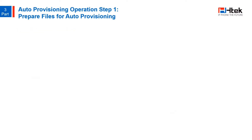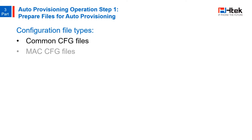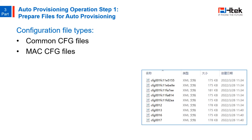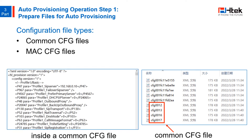You can use the configuration files to deploy and maintain a mass of IP phones automatically. There are two types of configuration files that HTEC IP phones support: common CFG files and MAC CFG files. The common CFG file is effective for all phones of the same model — it uses a fixed name formatted as CFG-something.xml, where something depends on the IP phone model. The MAC CFG file is only effective for one specific phone; it uses the 12-digit MAC address of the IP phone as a file name. It is expected to be updated per phone, such as the registration information.